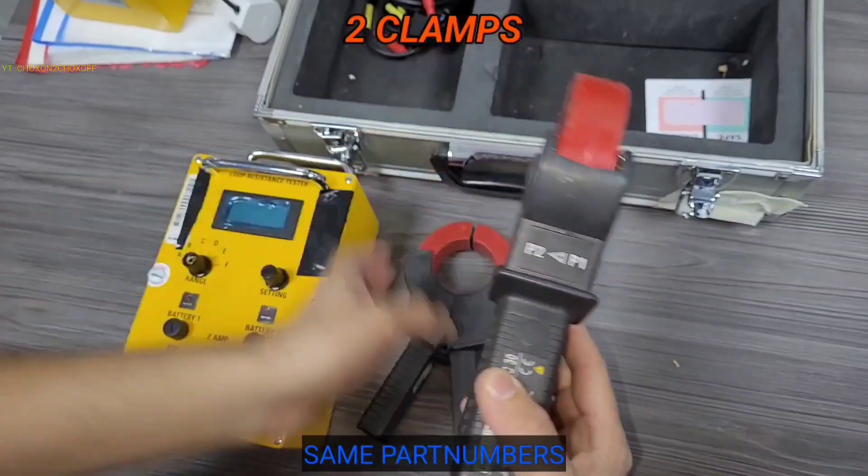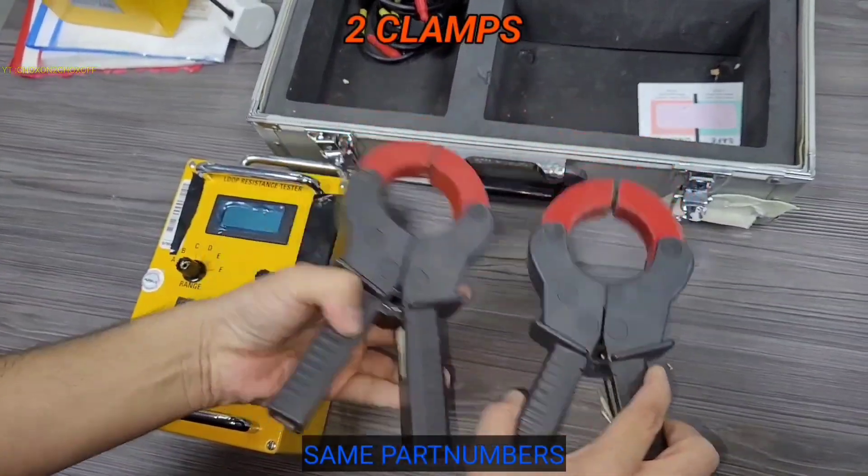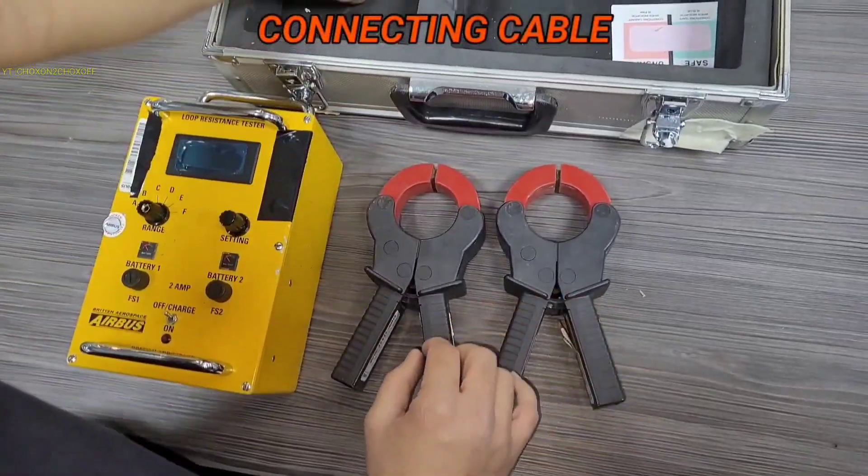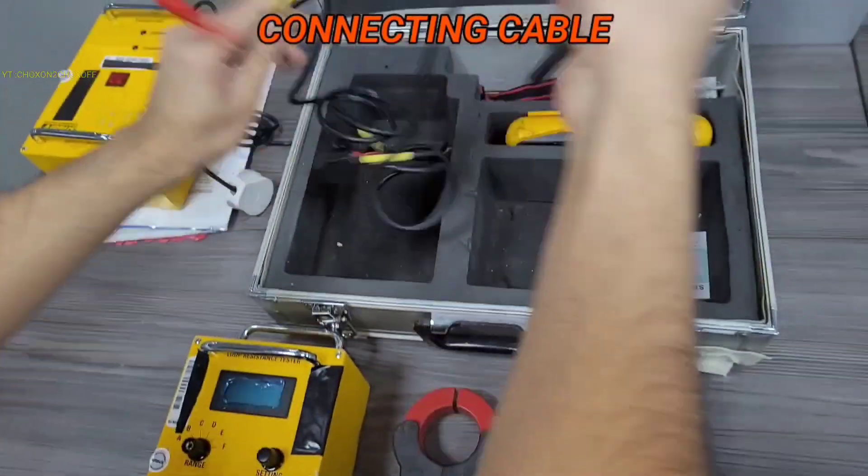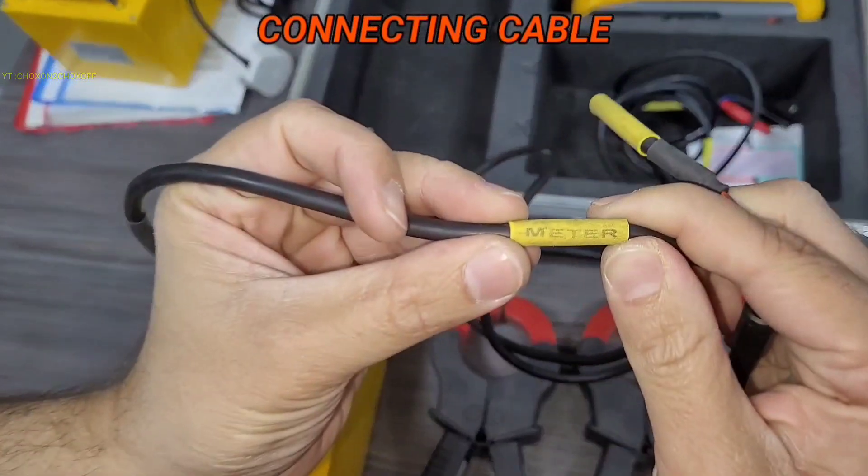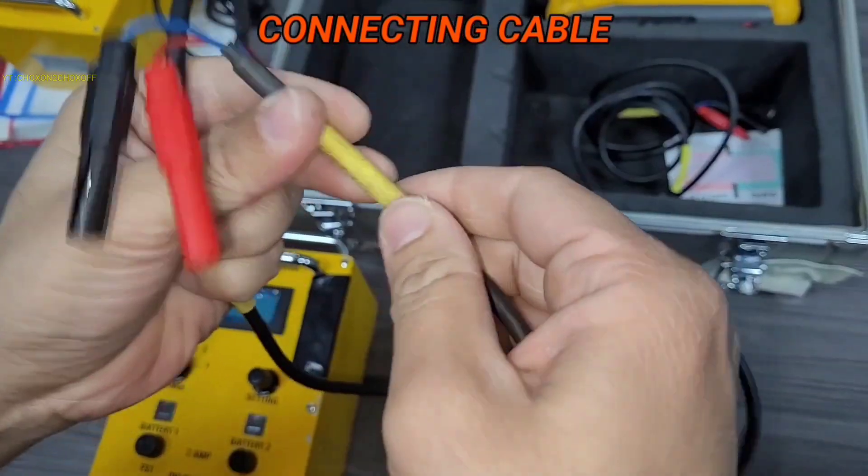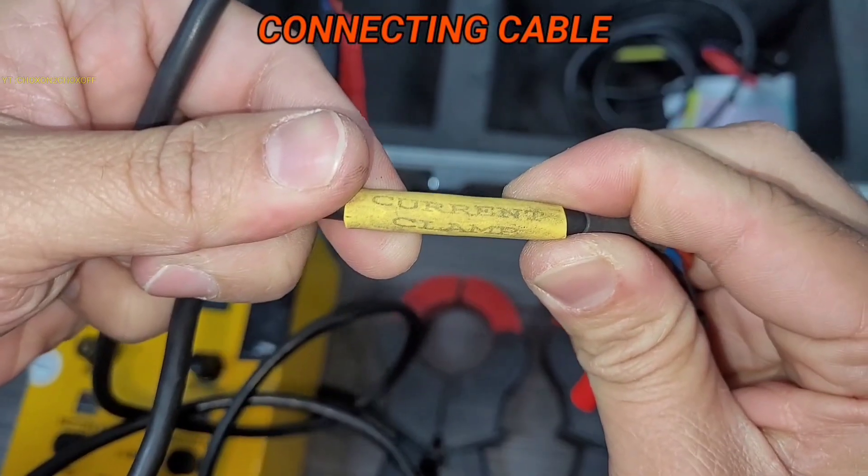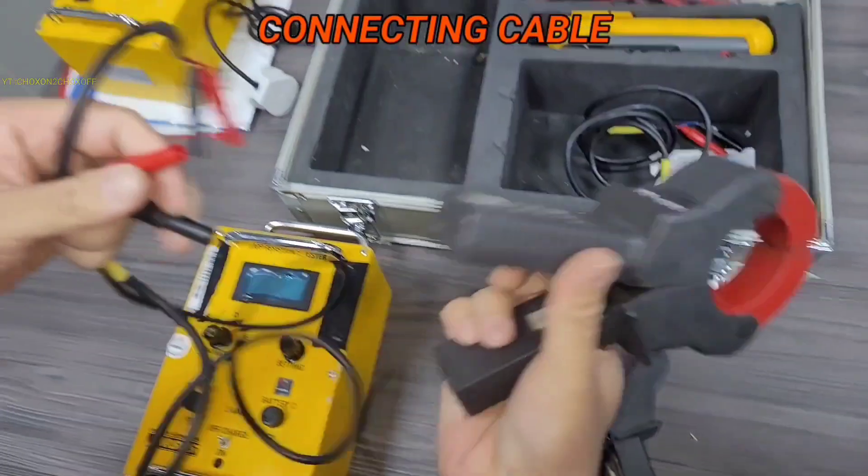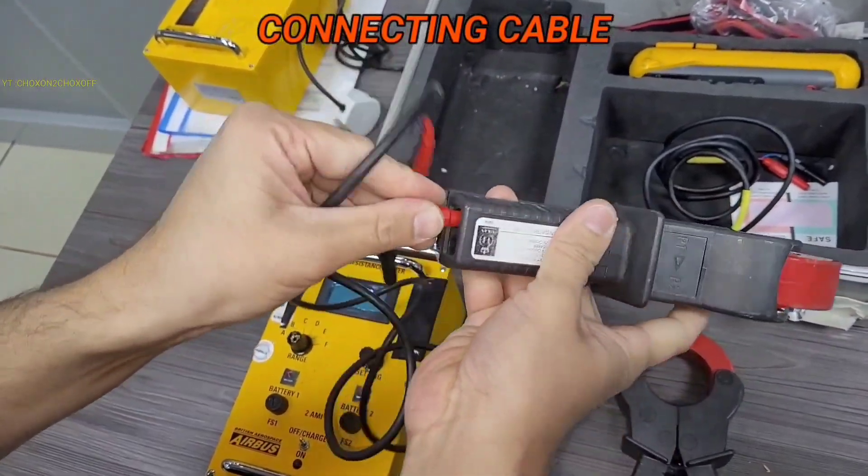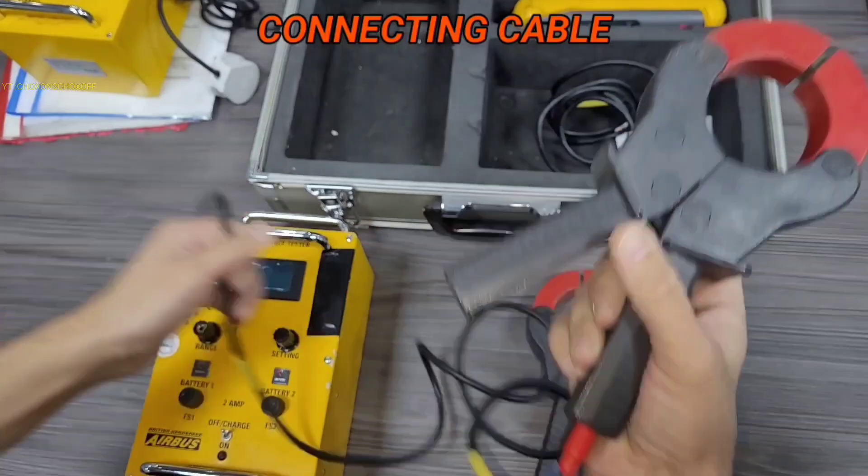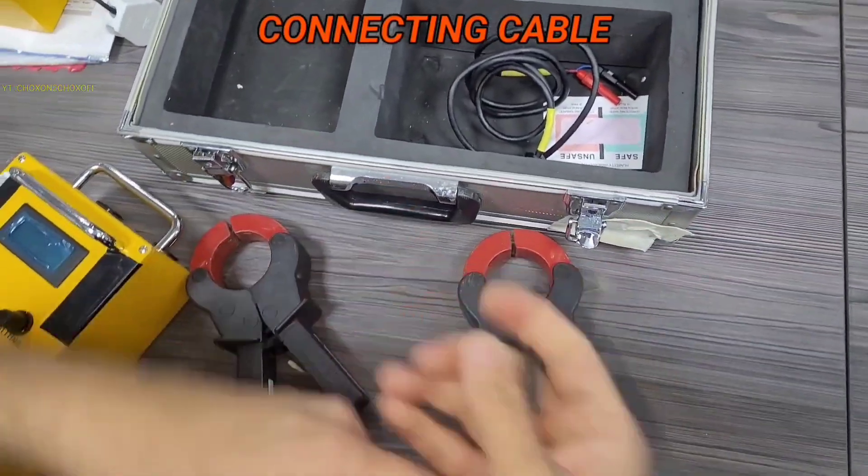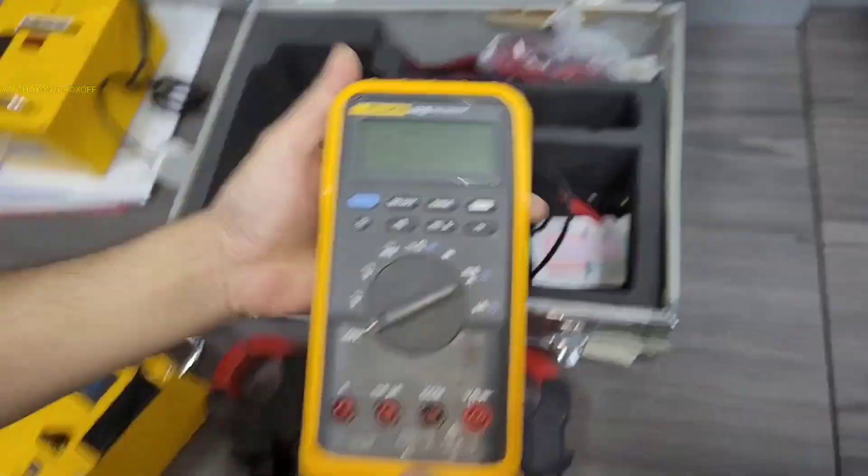There is another clamp. These two cables, this is the clamp. There is a connection over here to this clamp. Now these two cables connect to this meter and this is the current clamp.